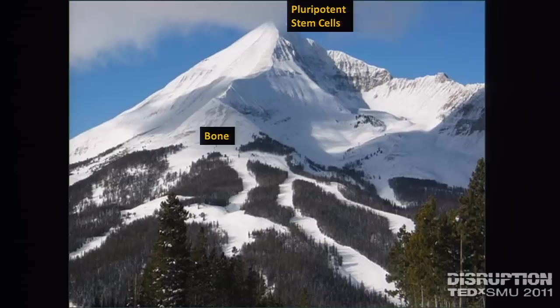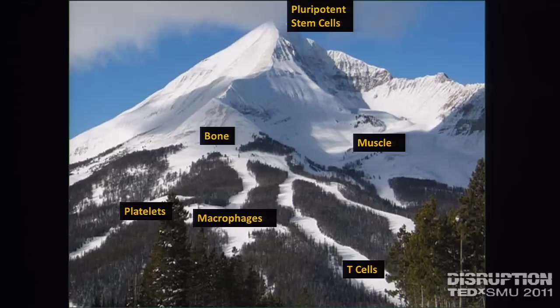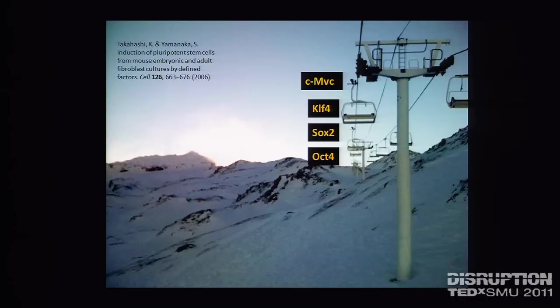Pluripotent stem cells work like a skier at the top of a hill — you can go anywhere, but once you commit, if you go this way maybe you become bone, that way a platelet, another way a macrophage, a T cell, maybe muscle. It used to be that once you were at the bottom, that was it — that was your body. But the implications of this experiment are that you now have a ski lift, based on these four chemicals, that can take any cell back up to the top of the mountain. In highly scientific terms, that is sometimes referred to as a BFD.